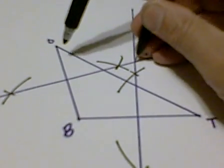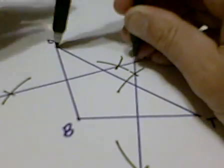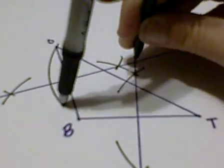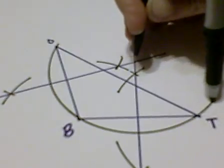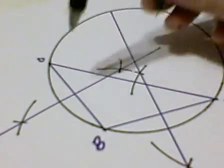To check it, we open the compass the distance from the circumcenter to any one of the three vertices, and it should pass through all three vertices very nicely.